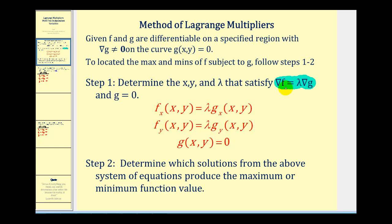The idea behind Lagrange multipliers is that f will have a max or min value when the gradient of f is a multiple of the gradient of g, meaning these two vectors are parallel where a max or min value occurs. Once we determine x, y, and lambda, step two will be to determine which of the solutions produce a maximum or minimum function value.